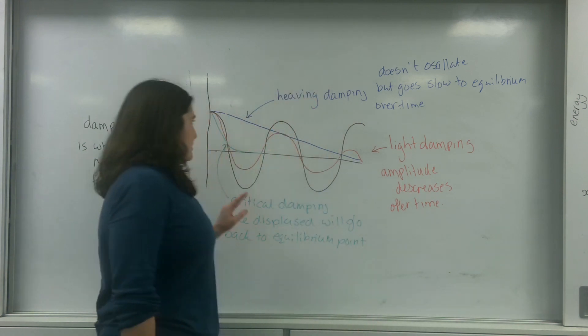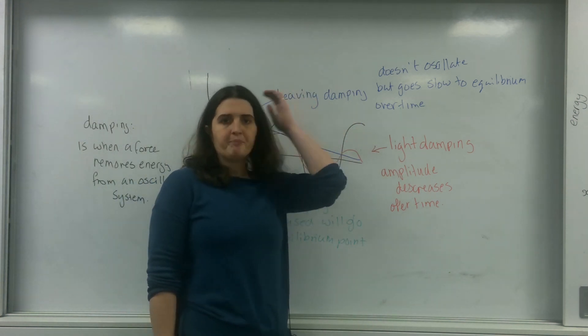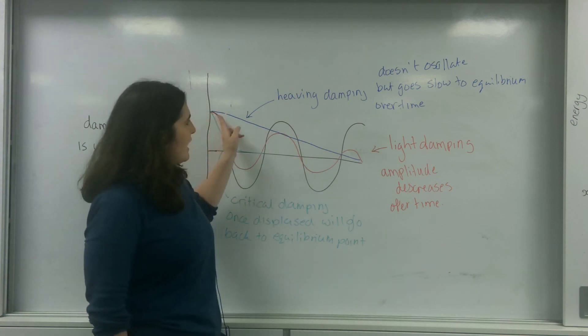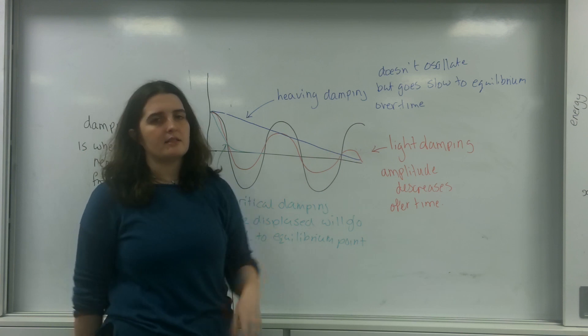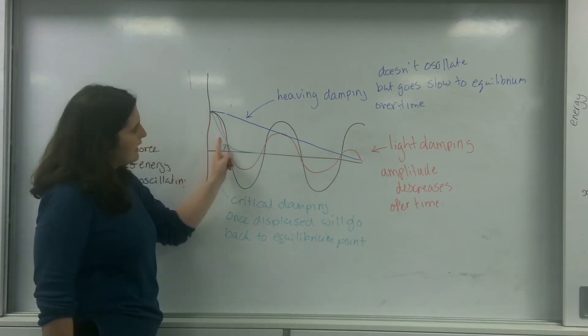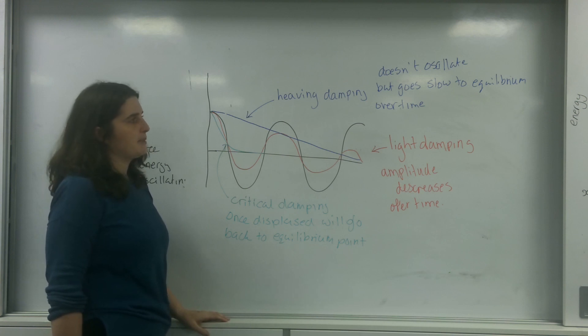So a lightly damped system is the traditional oscillation that decreases in amplitude over time. A heavily damped system is one that will very slowly go to zero. And a critically damped system is one that will go to zero almost immediately after being displaced.